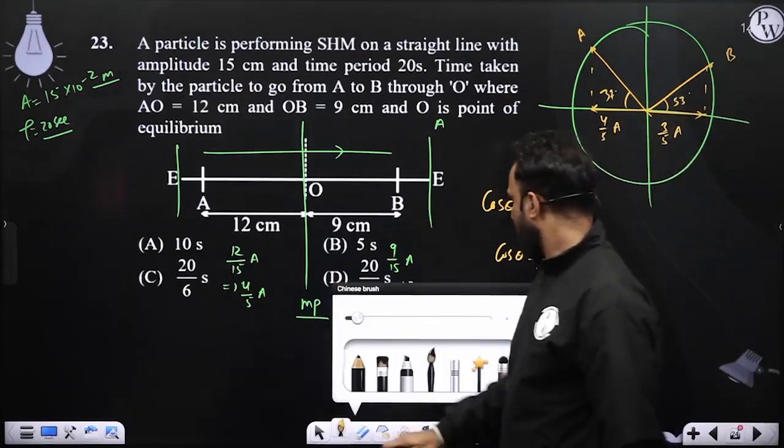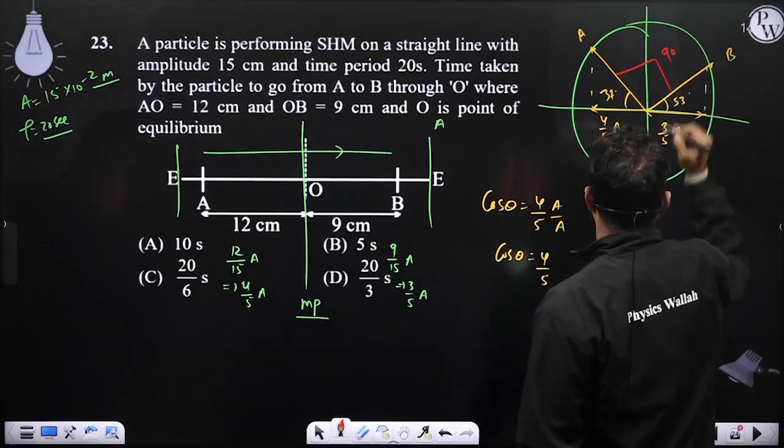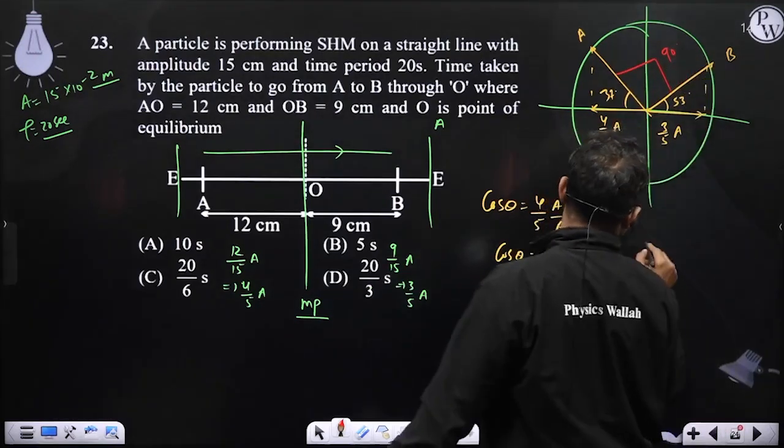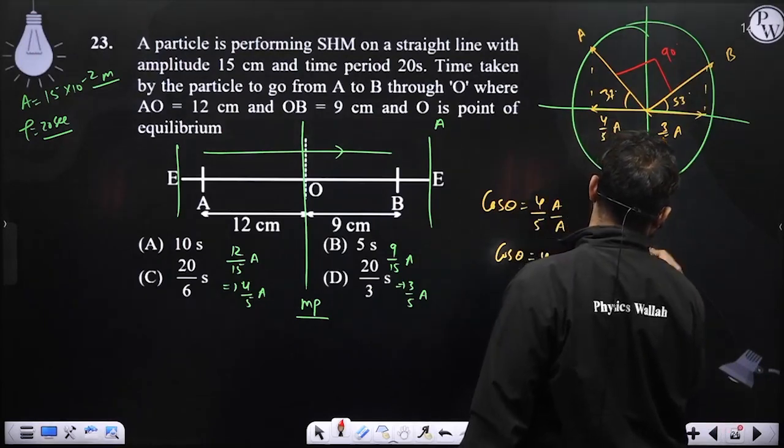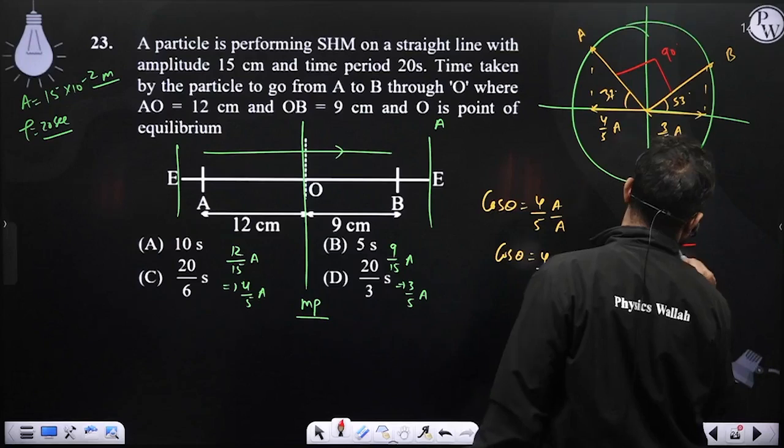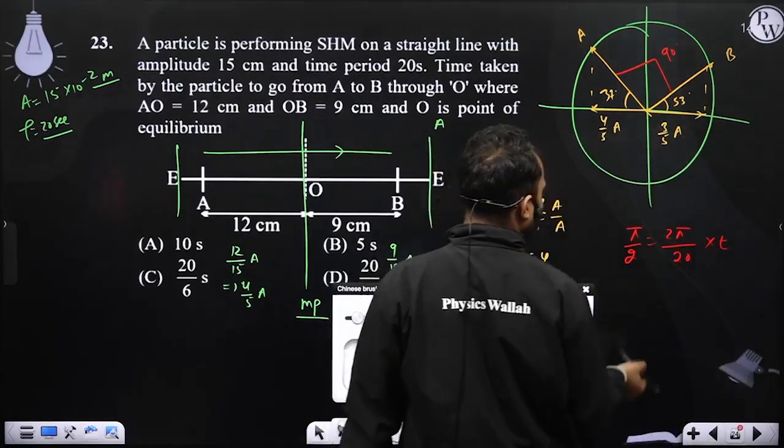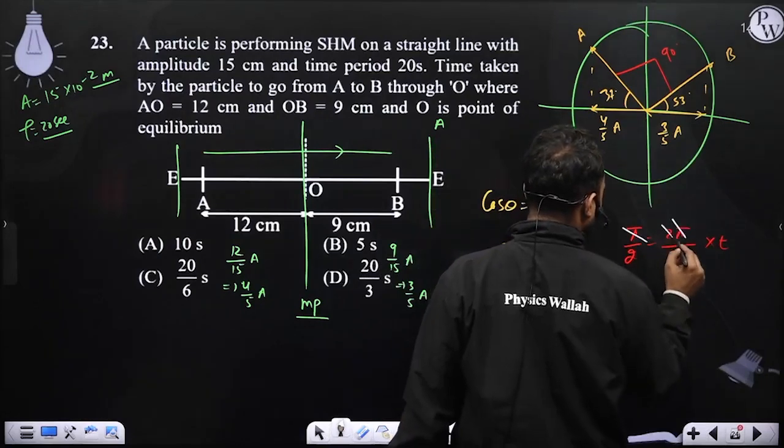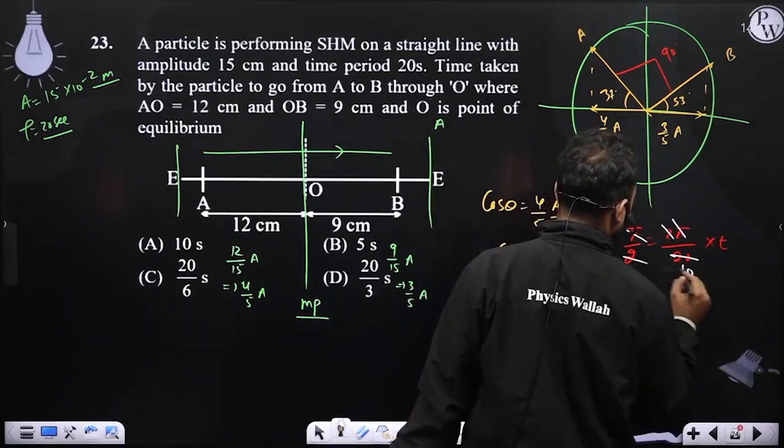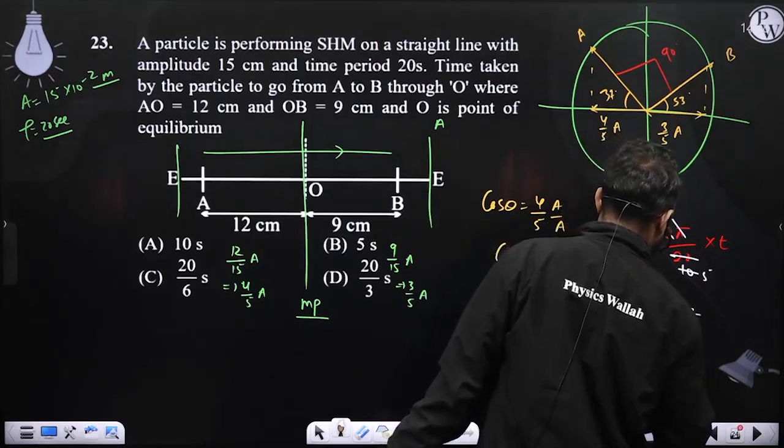Now for going from A to B, basically we have to cover 90 degree angle here. And for covering pi by 2 phase, the time needed, 2 pi by time period is 20 seconds for T. Now if you solve this, pi and pi will cancel out, 2 will cancel out by 10 times, this will cancel out by 5, then time is nothing but 5 seconds.